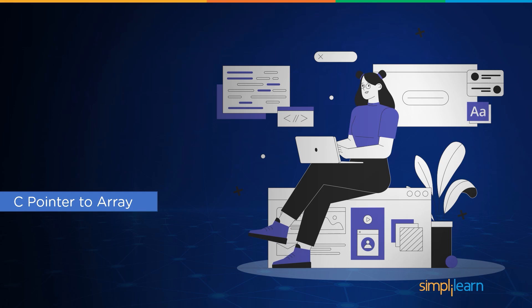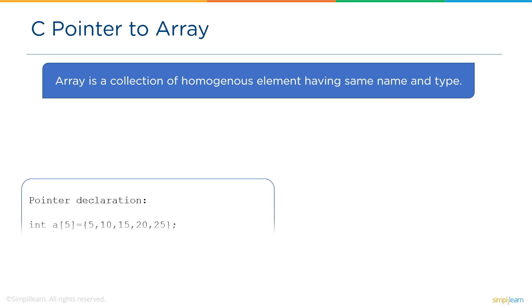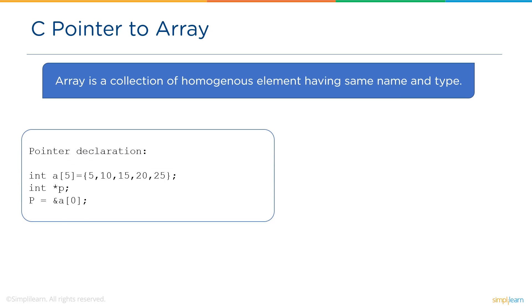Up next we have a C pointer to an array. An array is a collection of homogeneous elements having the same name and type. C uses a pointer to an array to reduce the memory space of the program code. In a pointer to an array, the address of the first element of an array is assigned to the pointer variable.